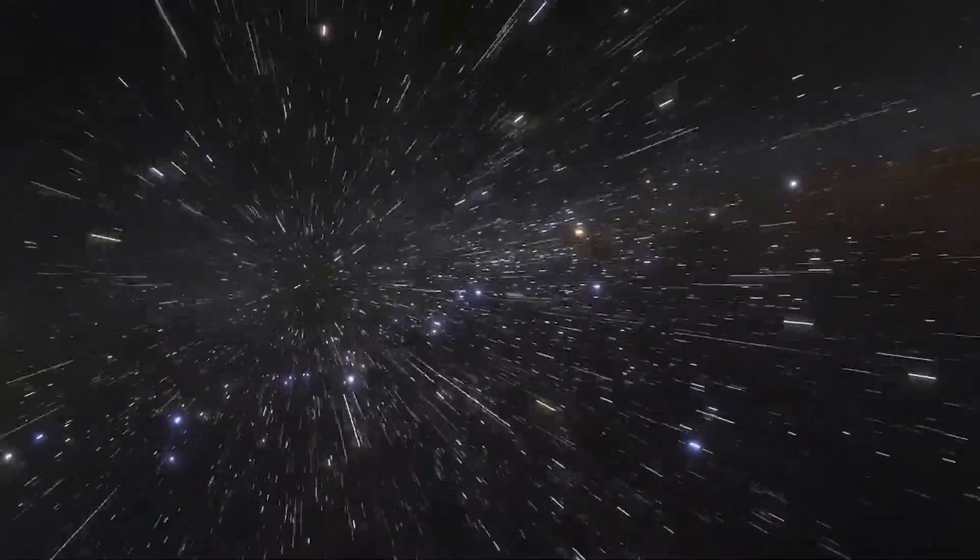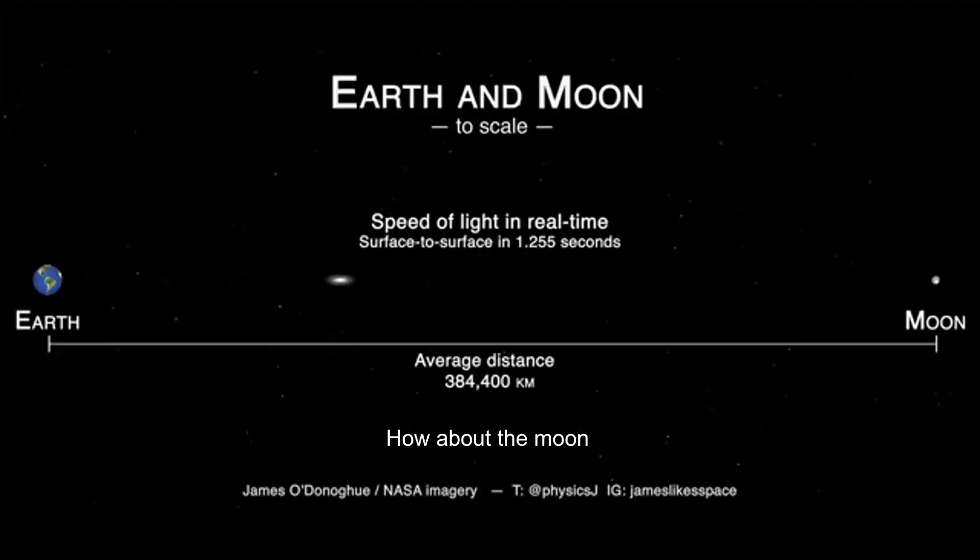The speed of light is the fastest known thing in the universe, and as far as scientists know, the laws of physics prohibit anything from exceeding the speed of light. Light zips through space at about 300,000 kilometers per second.